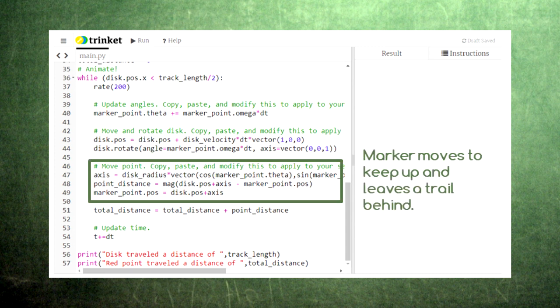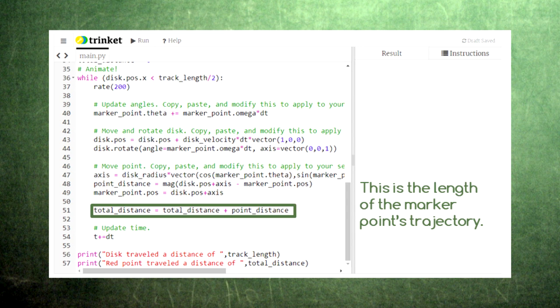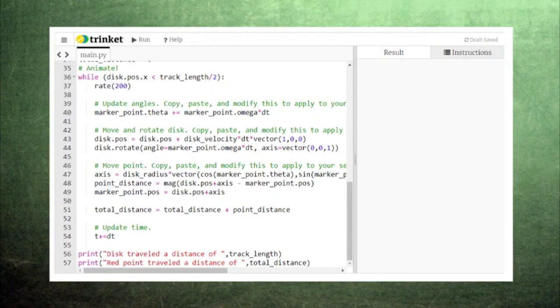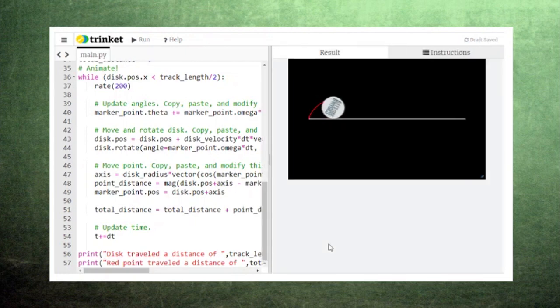Then we move the marker, keeping it at the same spot on the edge of the disc. We'll use the variable point distance to keep track of how far the marker has traveled. Running the code, we can see the disc rotate, and the marker point helps us see how the bottom point of the disc always keeps tight contact with the track.